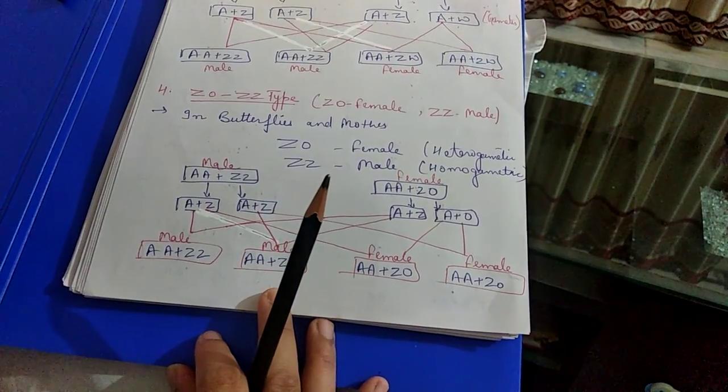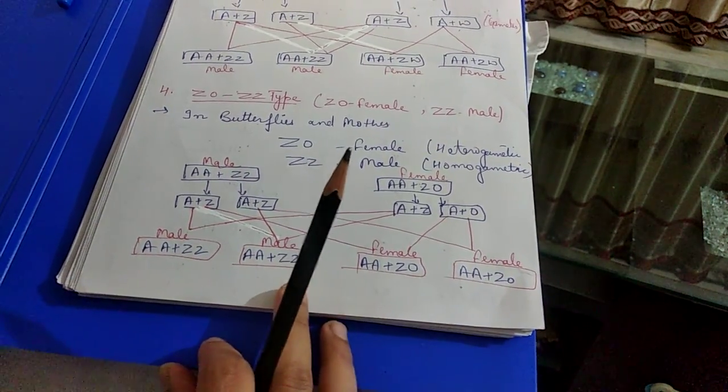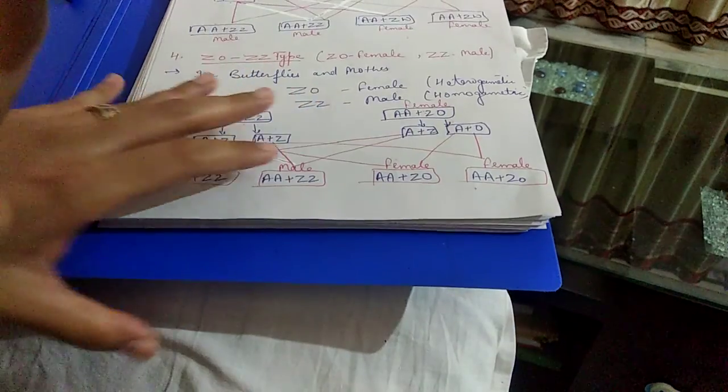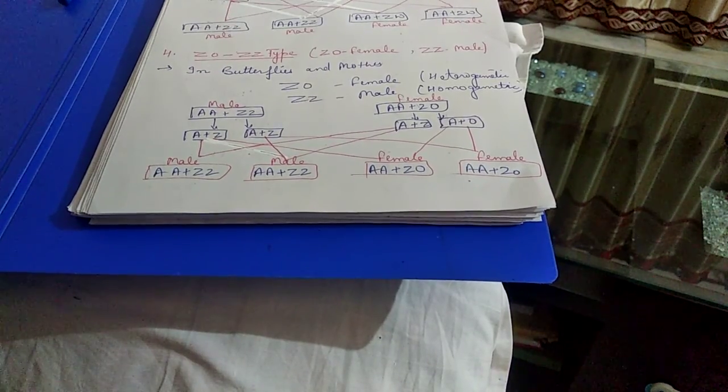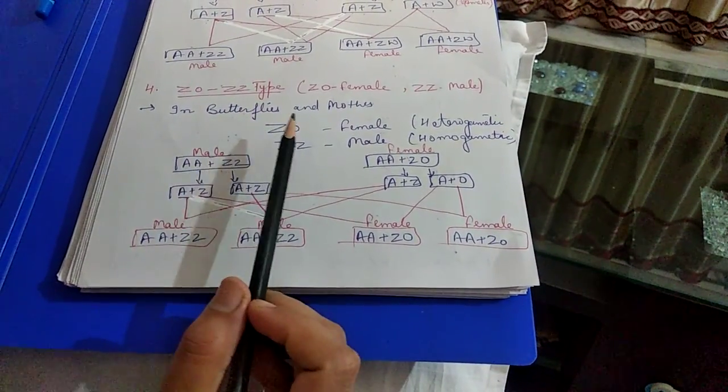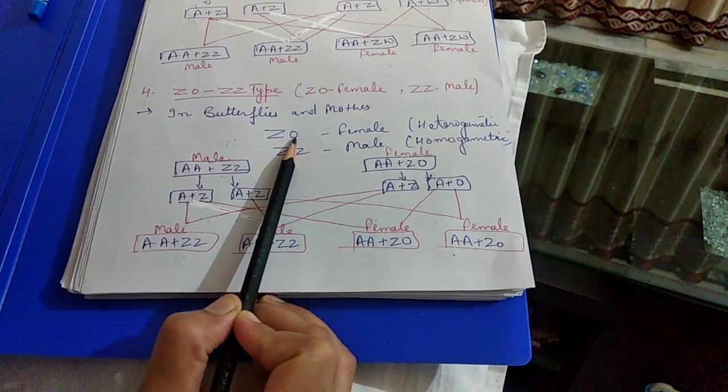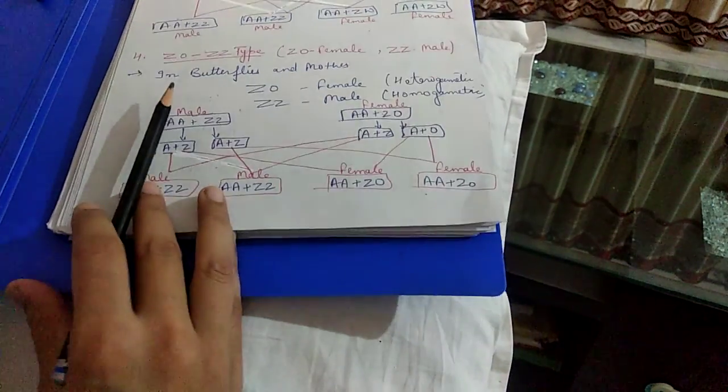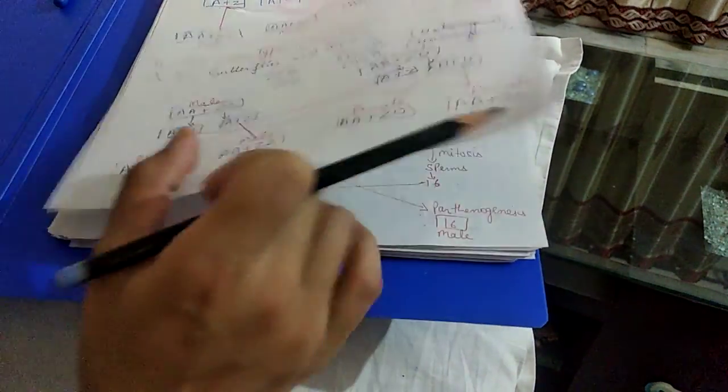Last type is Z0-ZZ type. Z0 is female, ZZ is male. This occurs in butterflies and moths. Females produce two types of eggs: one contains autosomes plus Z, another contains autosomes plus no sex chromosome. Males produce autosome plus Z only, so they are homogametic. Cross will be made in the same way with same result: 50% probability male, 50% female.